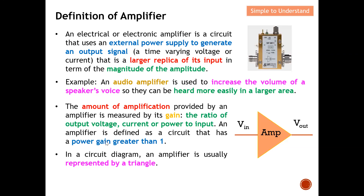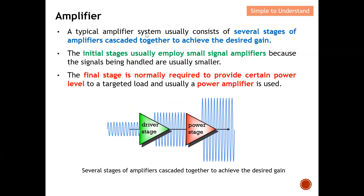An amplifier is defined as a circuit that has a power gain greater than one. If it's less than one, the signal is attenuated — it becomes smaller. Gain of one means input and output remain the same, so any value above one, like 1.1, means amplification. In a circuit diagram, an amplifier is usually represented by a triangle. The gain is V-out over V-in, as illustrated.